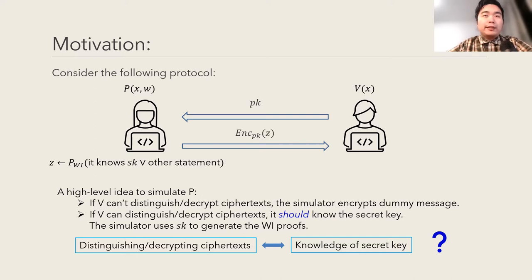Now, as we can see, if the verifier can't distinguish the ciphertext, then the simulator can easily encrypt a dummy message to conclude the simulation. And if the verifier can distinguish the ciphertext, which means that the verifier should know the secret key, then we hope the simulator can use the secret key as a trapdoor to generate the ZK proofs.